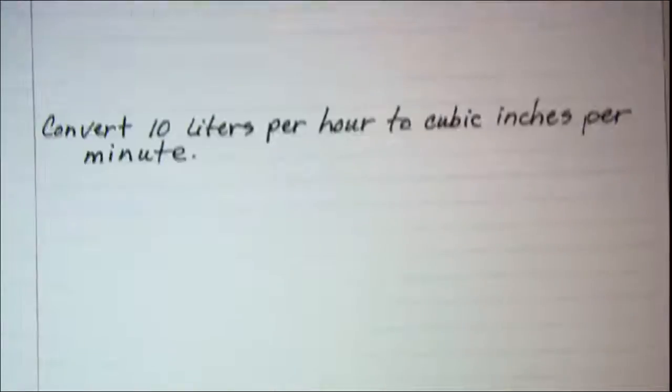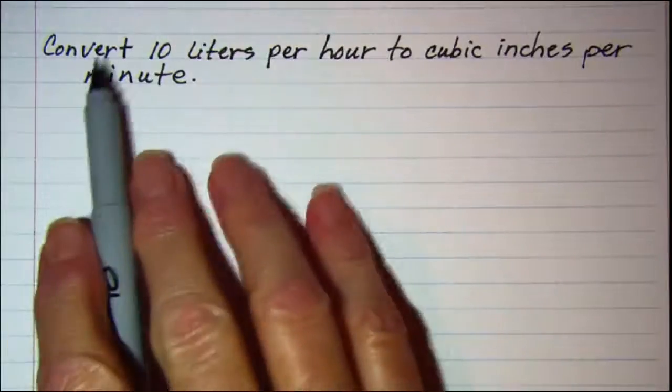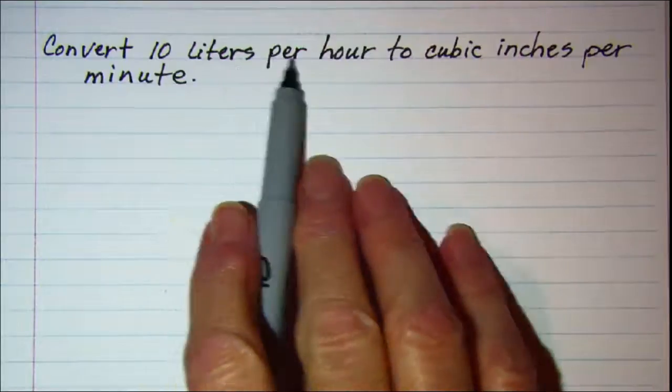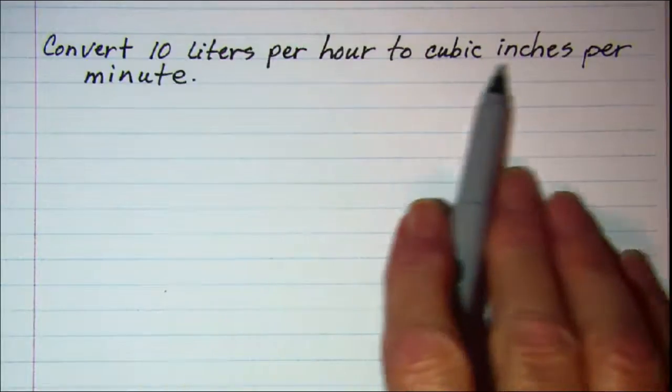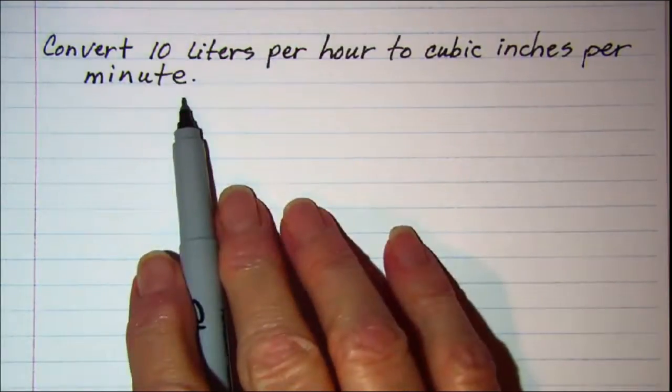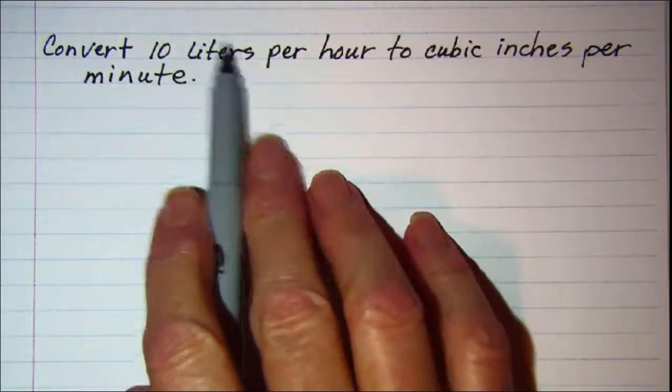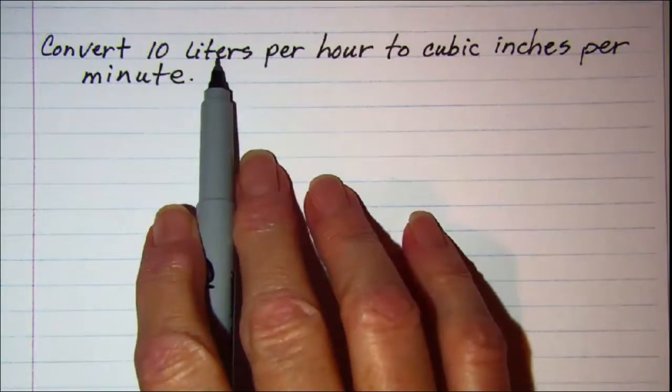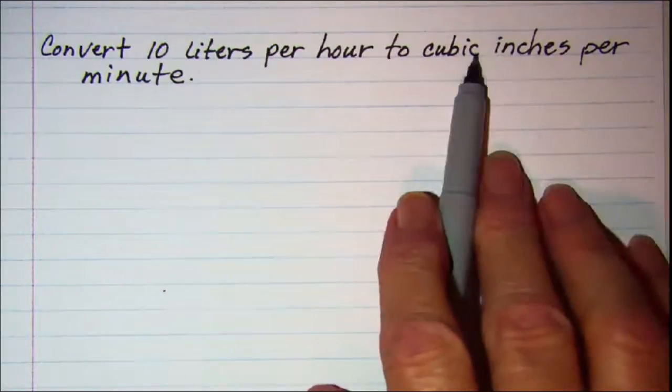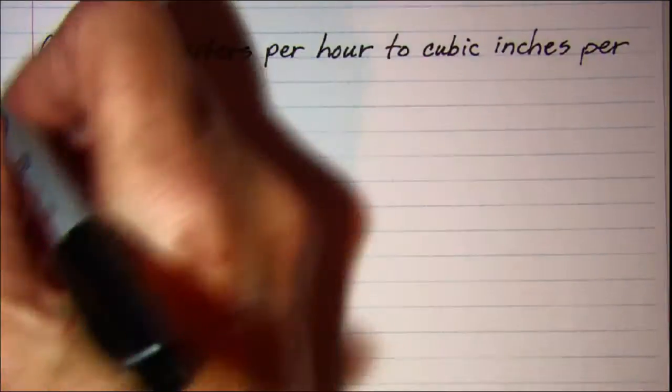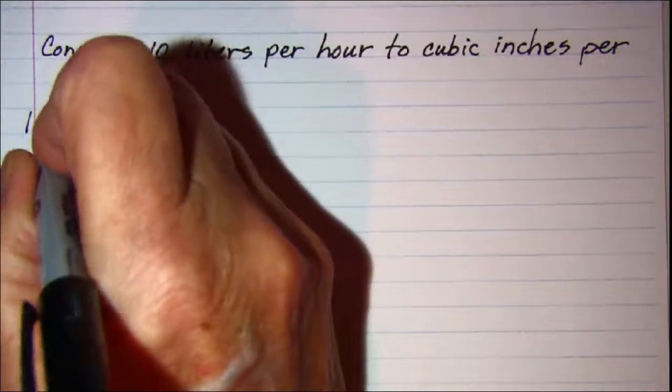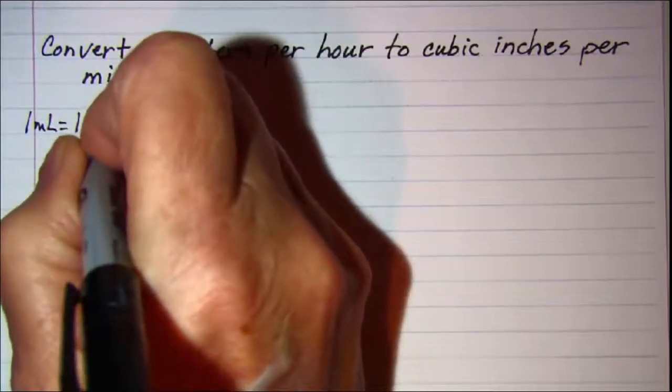Let's do another one. In this example we're asked to convert 10 liters per hour to cubic inches per minute. Again, my metric volume going to English volume, I'll need to use 1 milliliter equals 1 cubic centimeter.